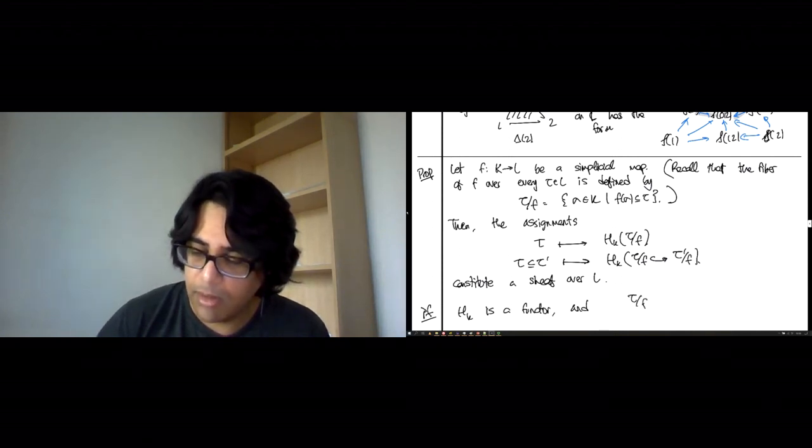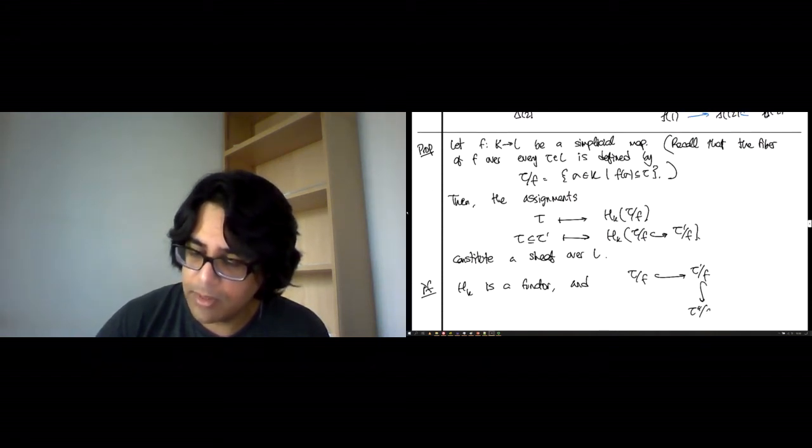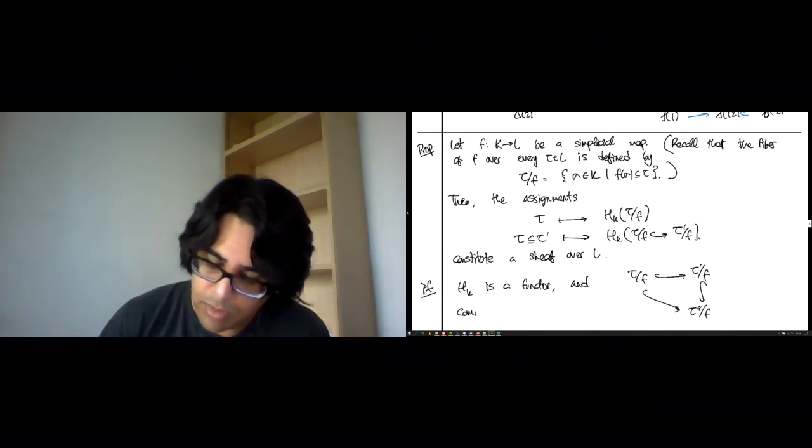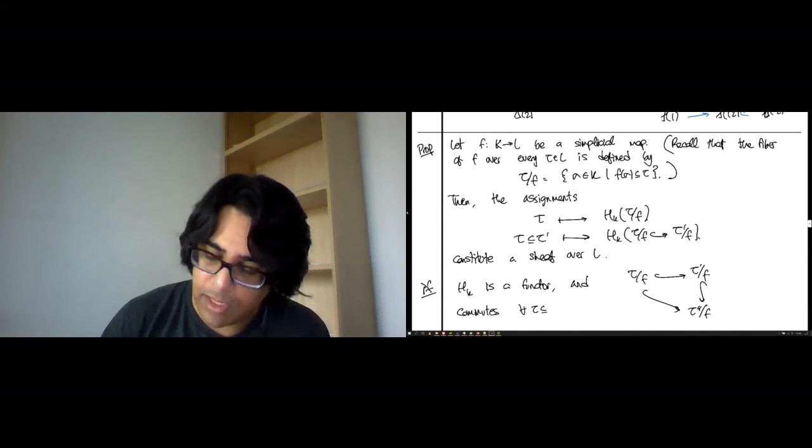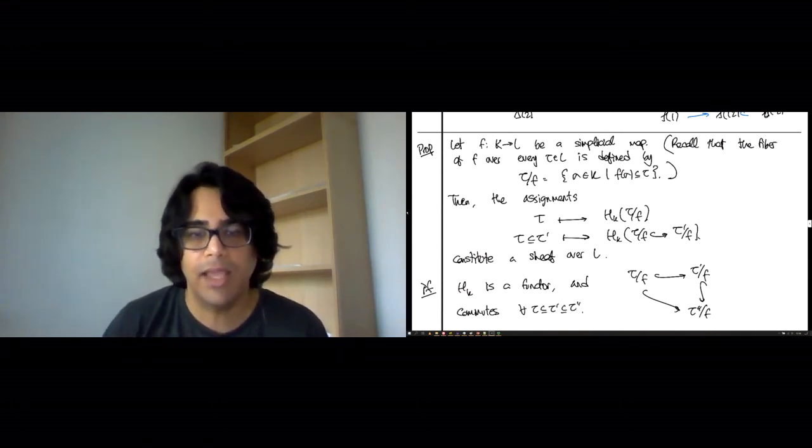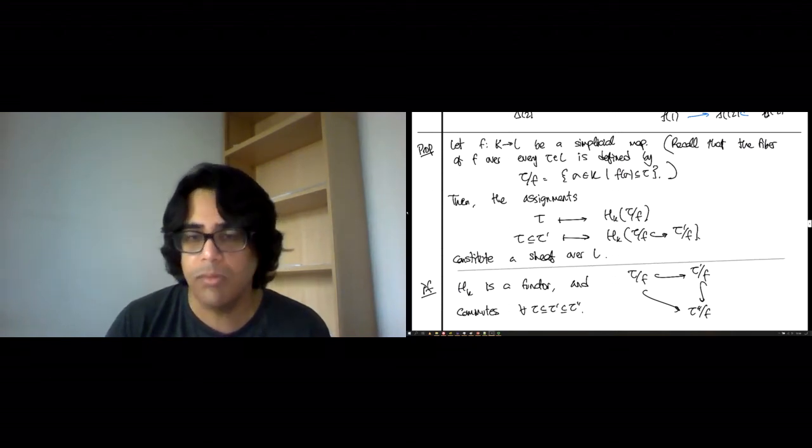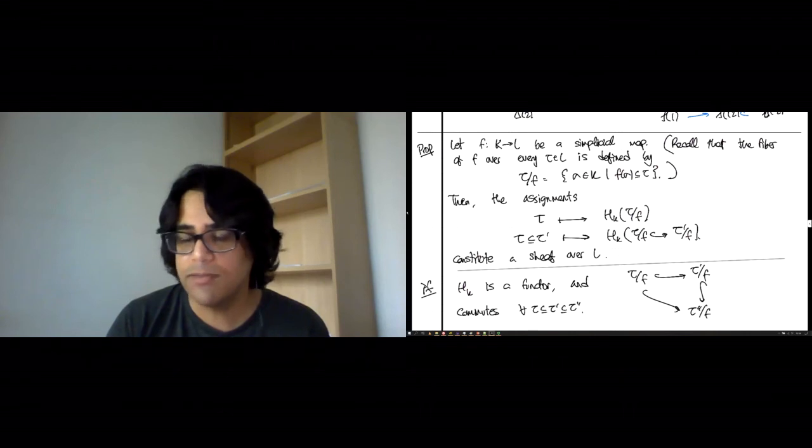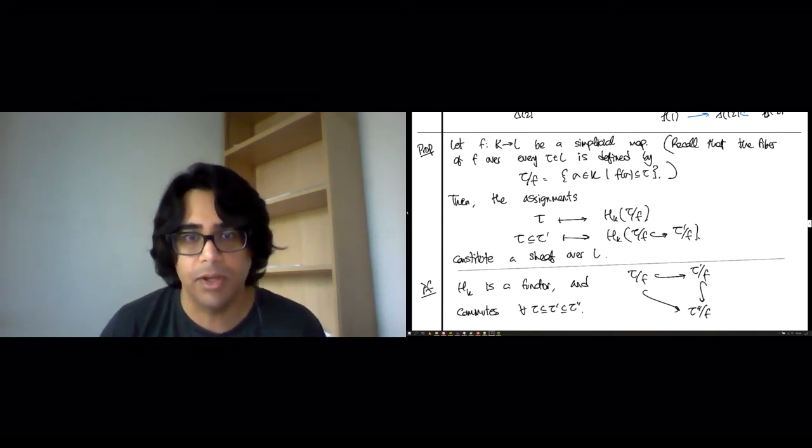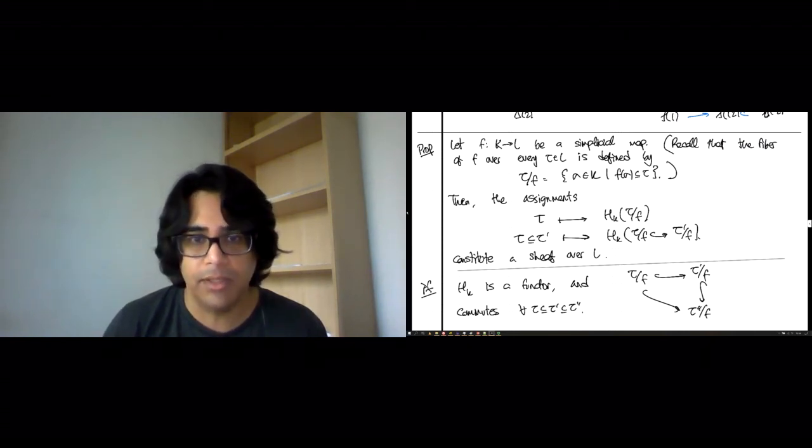And the proof is a one-liner: homology is a functor. And this inclusion of subcomplexes commutes for every tau, tau prime, tau double prime ascending sequence. So when you apply the kth homology functor to each of these three, then you'll get something commuting, and therefore the strict associativity axiom is automatically satisfied when you take the kth homology of the fiber. So these fibers are sort of now living over simplices instead of living over real numbers as they were for persistence modules, but roughly we have the same structure. So in the next lecture, now that we know how to build sheaves from fibers, we will see what we can do with sheaves. See you there.